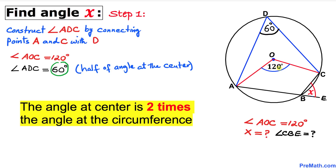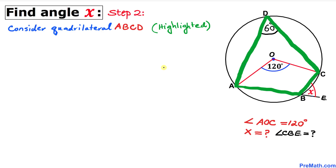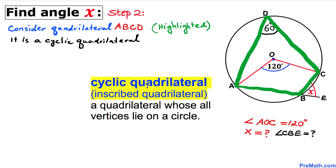Our next step is to focus on quadrilateral ABCD, which is highlighted here. This quadrilateral is called a cyclic quadrilateral — sometimes called an inscribed quadrilateral — meaning all its vertices lie on the same circle. Vertices A, B, C, and D all lie on the same circle.